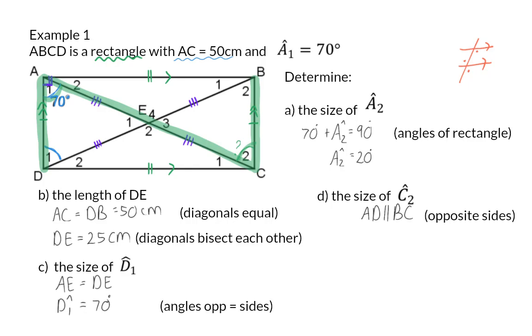because they are opposite sides of our rectangle, and then we made the conclusion that C2 is also 70 degrees, because of the alternate angles.